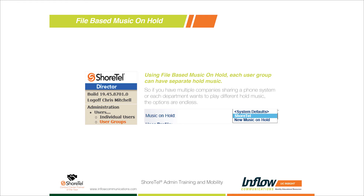User groups can also be department-based — for example, accounting might want to play different music than the sales department. To set this up, log into your Director page, expand Users, and go to User Groups. Most customers have at least 10 user groups listed on the right-hand side. If you're not sure who is in which user group, go to the individual Users page just above User Groups to see what user group each person belongs to.